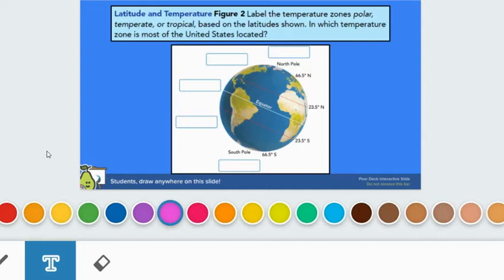Okay, so first let's label the polar zones because we know those are at the far ends. So let's get our text feature. Let's size it appropriately. And then we know here's the North Pole and the South Pole.